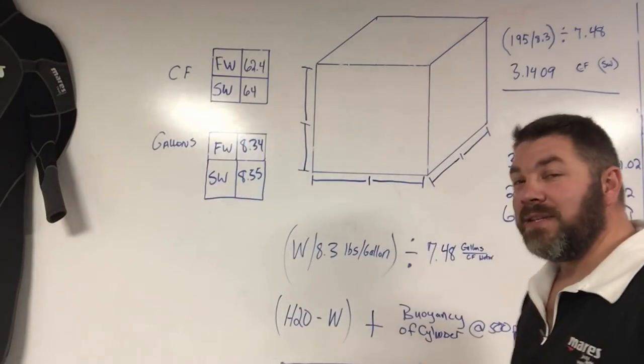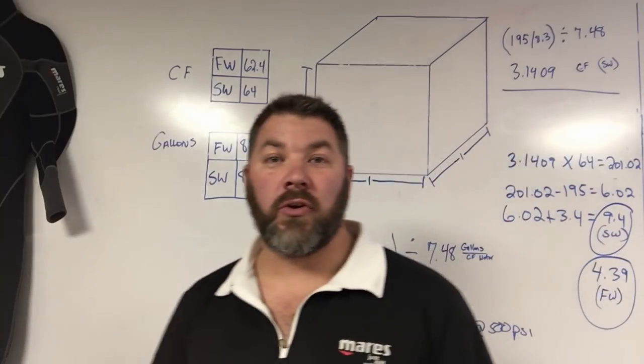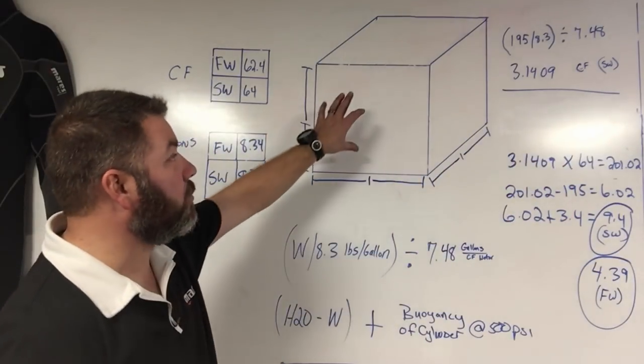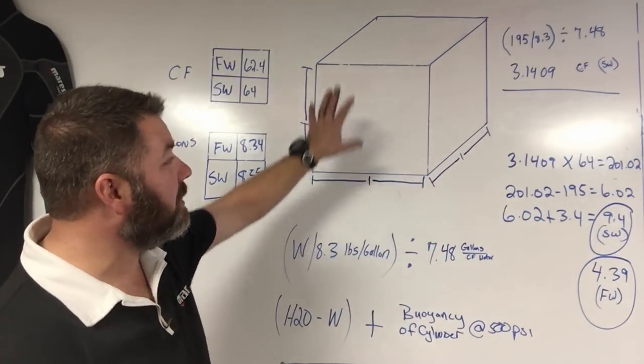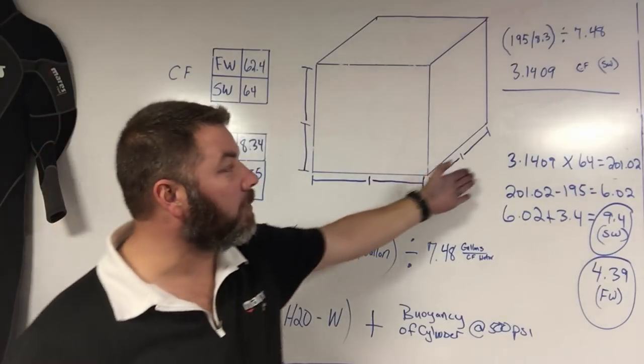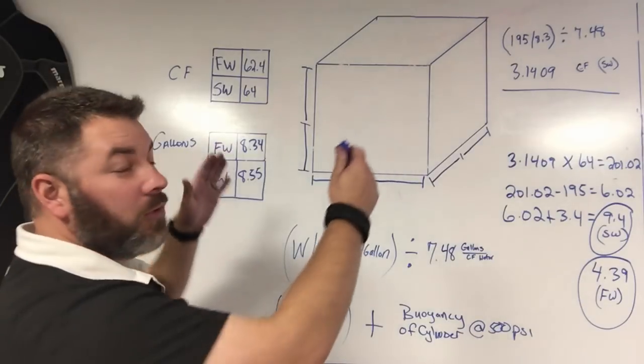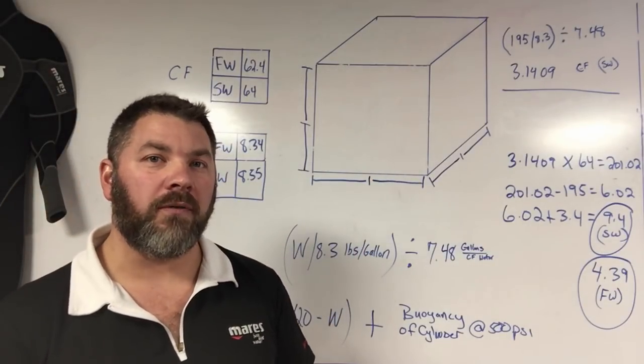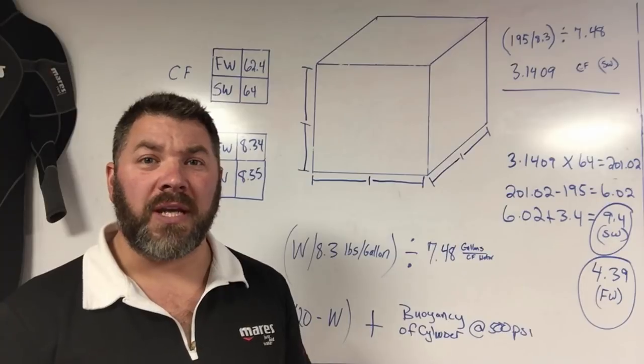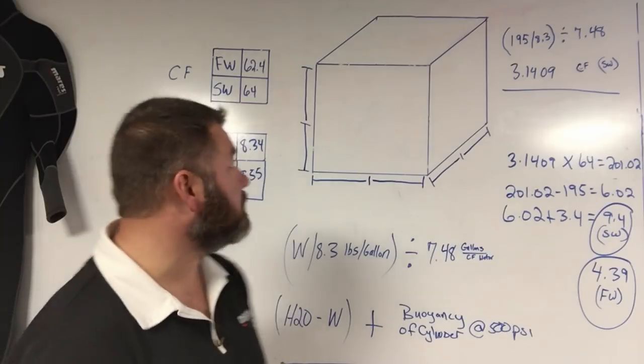When we talk about displacement of water, we deal with cubic footage. If you want to know what an actual cubic foot is, it's basically a cube that is one foot by one foot by one foot. I've got one drawn up here just to give you a good representation of what cubic footage is, which is the measurement we use anytime we're talking about water displacement.